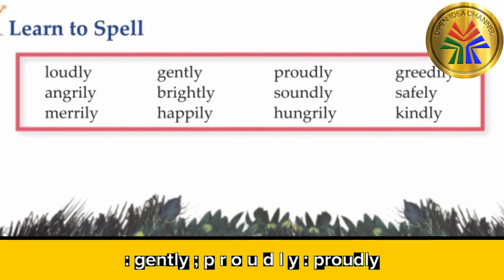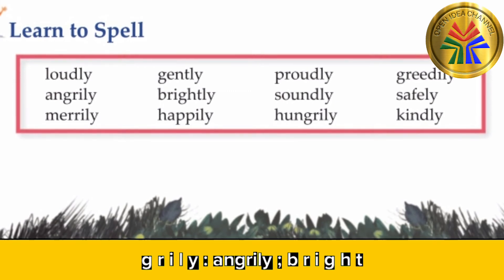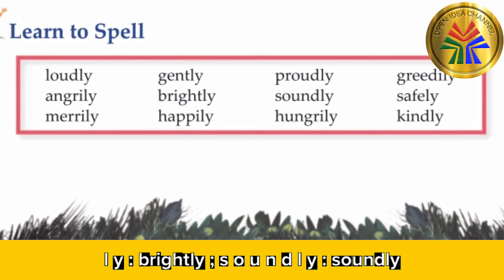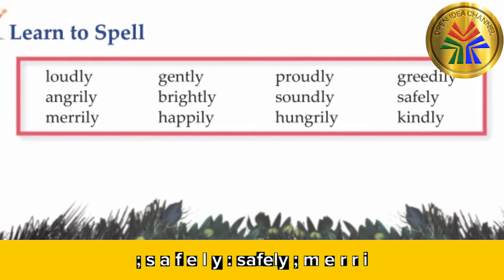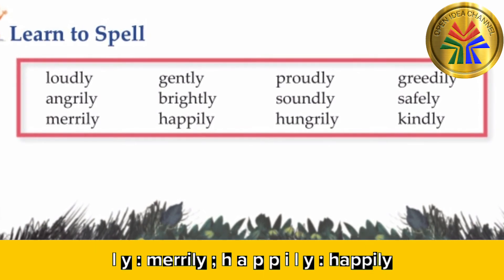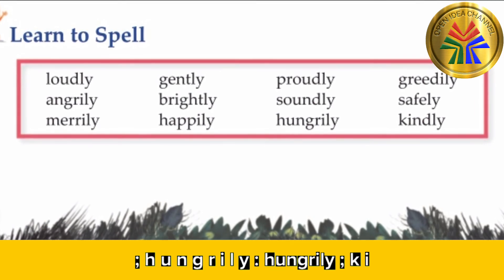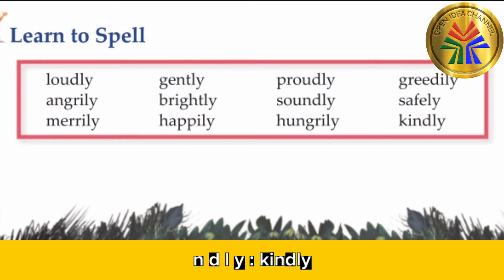Learn to spell: L-O-U-D-L-Y — loudly. G-E-N-T-L-Y — gently. P-R-O-U-D-L-Y — proudly. G-R-E-E-D-I-L-Y — greedily. A-N-G-R-I-L-Y — angrily. B-R-I-G-H-T-L-Y — brightly. S-O-U-N-D-L-Y — soundly. S-A-F-E-L-Y — safely. M-E-R-R-I-L-Y — merrily. H-A-P-P-I-L-Y — happily. H-U-N-G-R-I-L-Y — hungrily. K-I-N-D-L-Y — kindly.